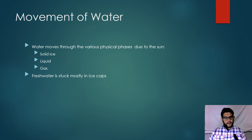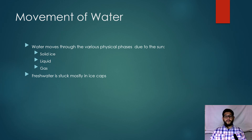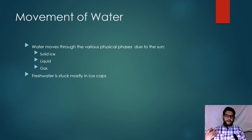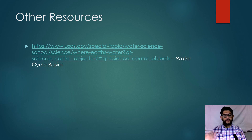Water moves due to the Sun, cycling through the different physical phases — solid, liquid, and gas. Most of our fresh water is stuck in those ice caps and not exactly accessible, although unfortunately we are making them more accessible, which we'll learn about for climate change later on. This is a short topic but a very important one — make sure you know what the terms mean: transpiration, sublimation, precipitation. There are some other resources to look through on water cycle basics, and hopefully that was helpful. We'll see you in the next video.